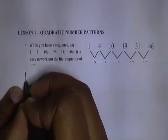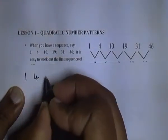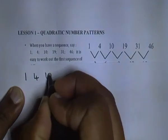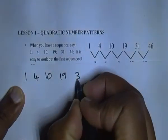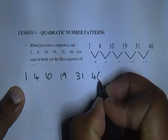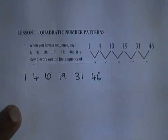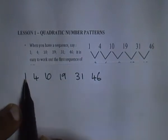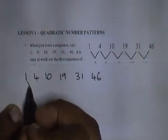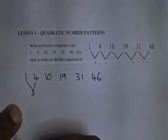The numbers are 1, 4, 10, 19, 31, and 46. Normally with linear patterns we'd expect to be adding the same thing or multiplying the same thing. Let's see how we get the next numbers here.